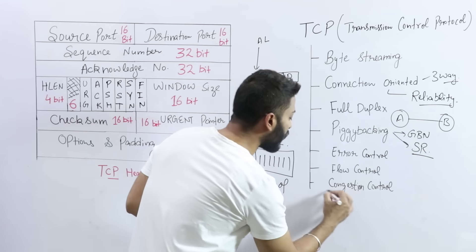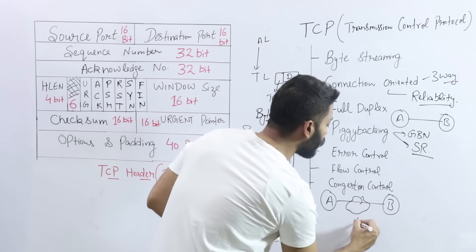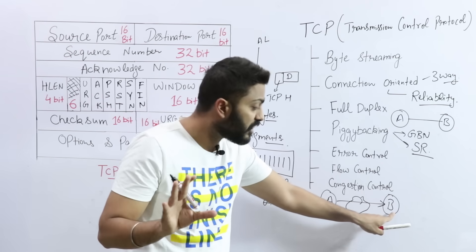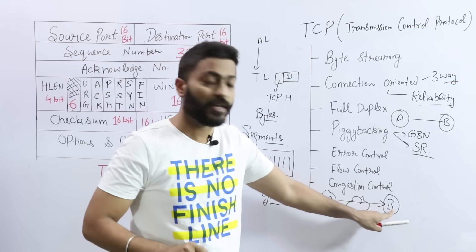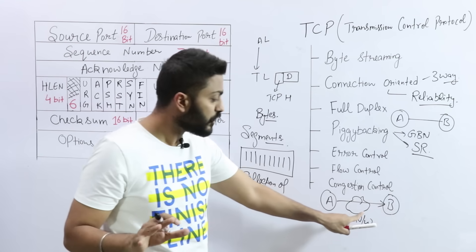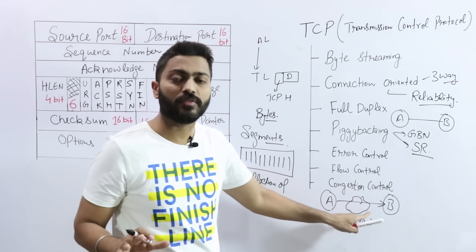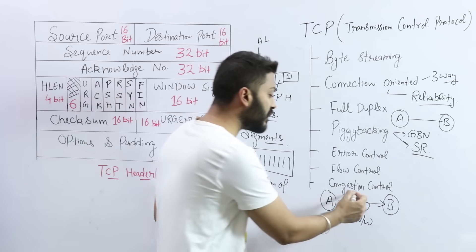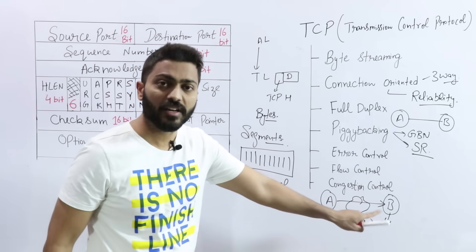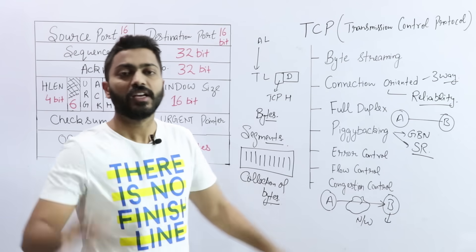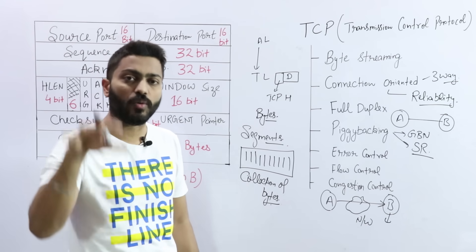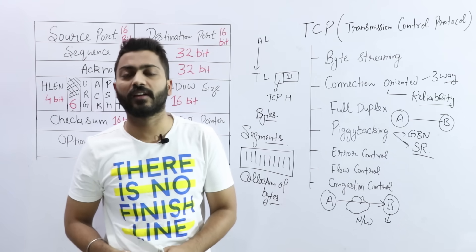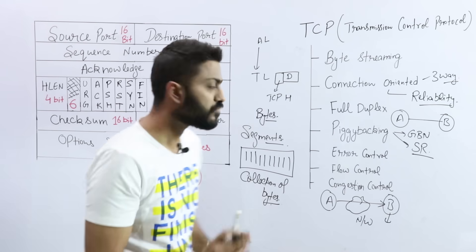Congestion control. Congestion control means whenever we send the data to the receiver, we take care of the receiver's capacity. If receiver's capacity is to accept 1000 bytes, then I will send maximum 1000 bytes data, not more than that. But TCP also takes care of the network. If I am sending data from A to B, I will take care of B's capacity, but also the network used between A and B. I have to take care that network should also not come into congestion. So TCP will take care of B as well as try to avoid congestion in the network. These are all different proper methods which we will see in detail. Here we are just seeing overview of TCP.